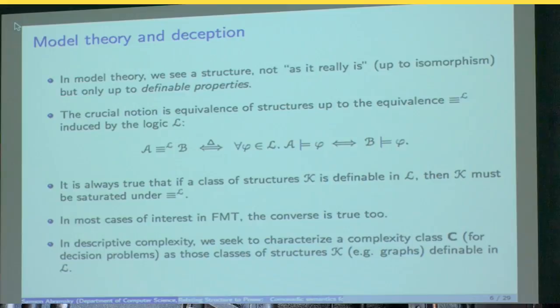So in descriptive complexity, we seek to characterize a complexity class as those classes of structures, for example, graphs, definable in the logic. So the classic result is Fagin's theorem, or Fagin and the Four Russians theorem, which says that the class NP is exactly those things definable in existential second-order logic. If you don't know what that is, it doesn't matter for our purposes. And since then, there's been a large dictionary of such correspondences.